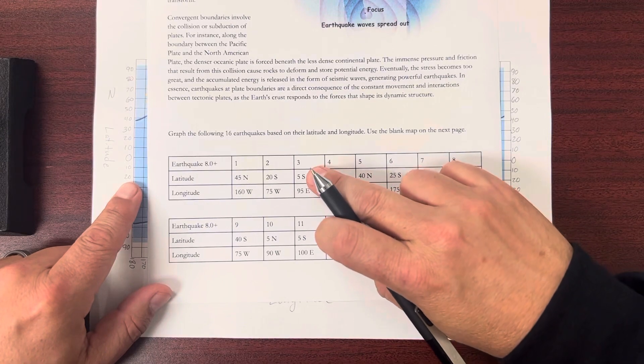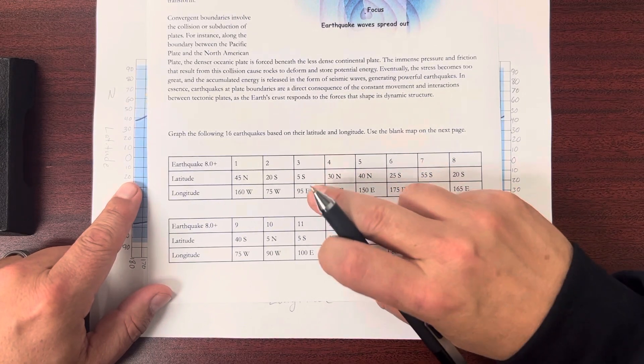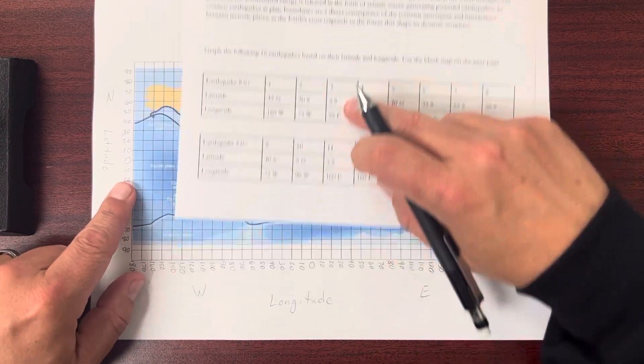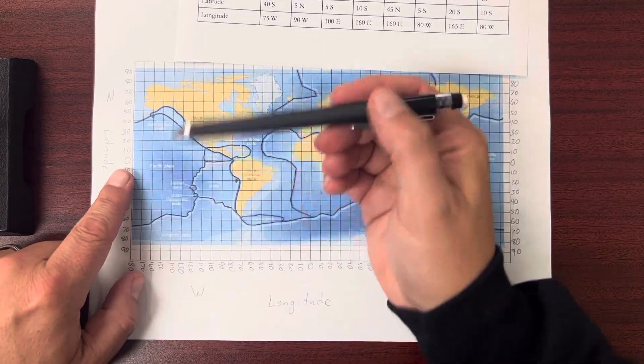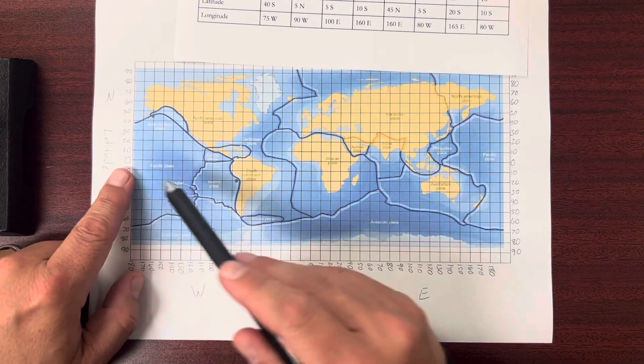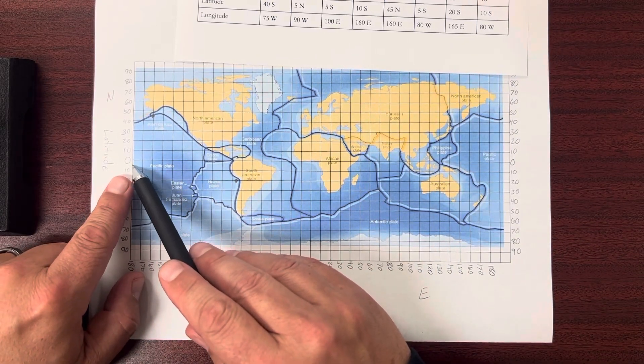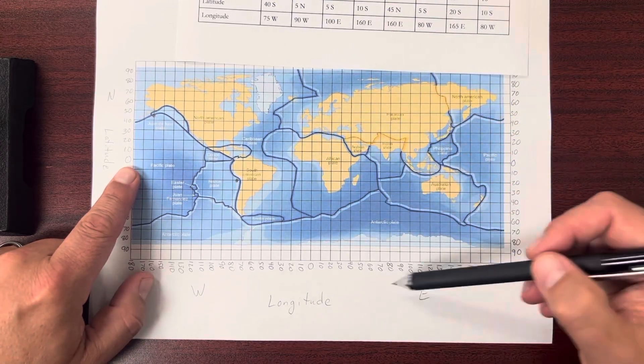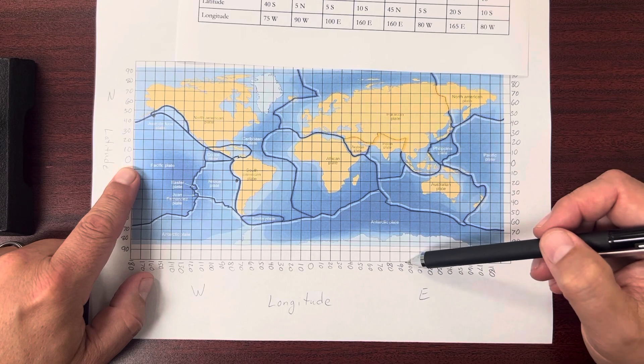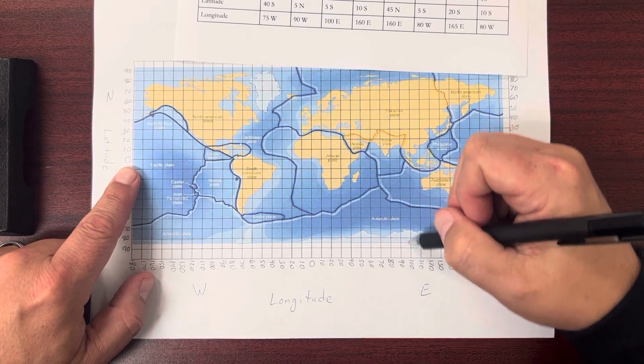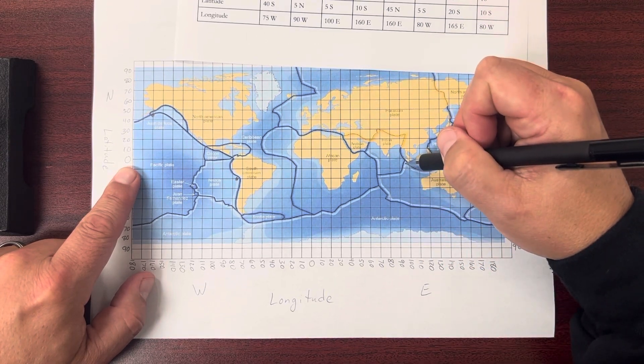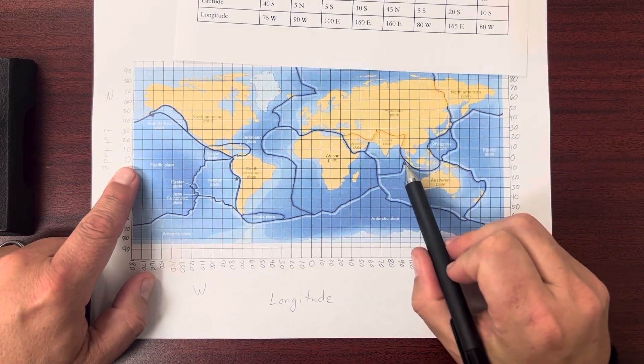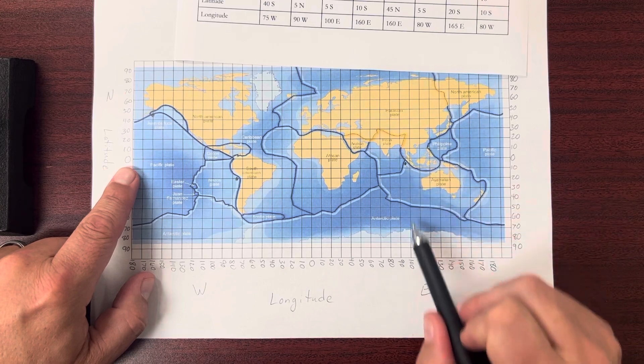I'll do one more with you. 5 south, 95 east for earthquake number 3. Alright. So now I'm 5 degrees south of the equator. That's in between 0 and 10. And 95 east. East is over here. So here's 90 and 100. 95 is right in the middle. 95, I go up. And 5 over. And it looks like 5 and 95.